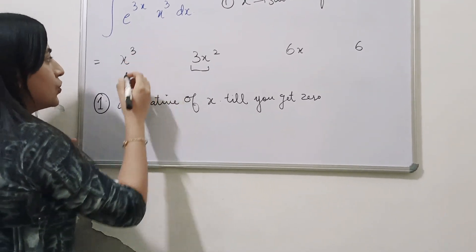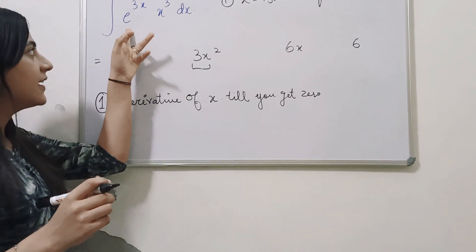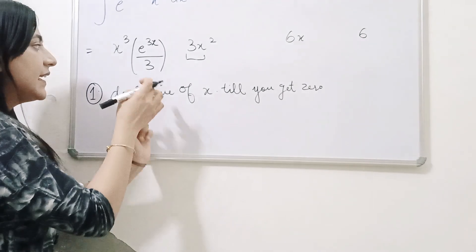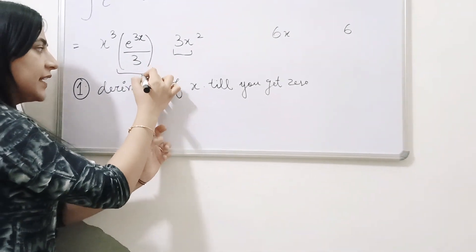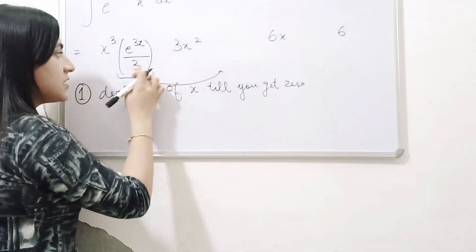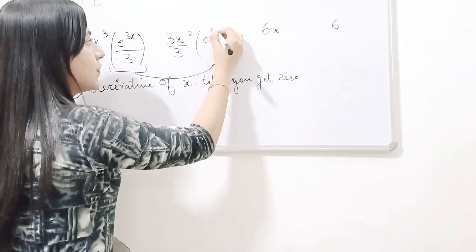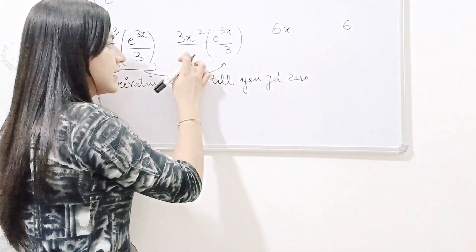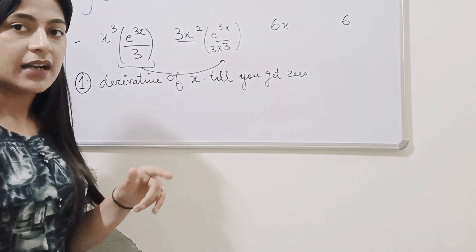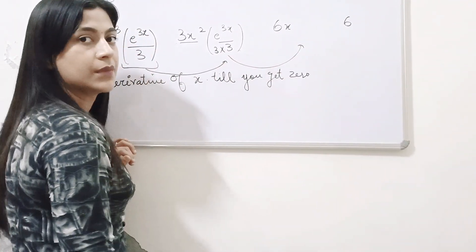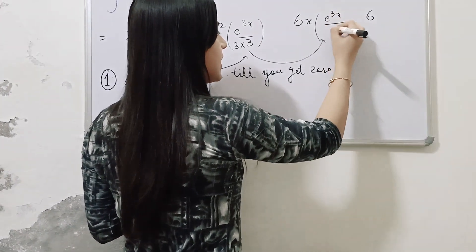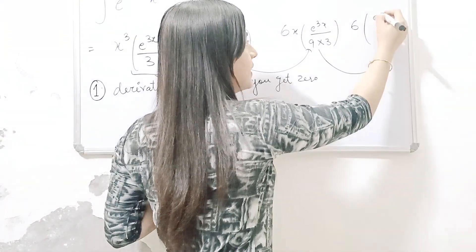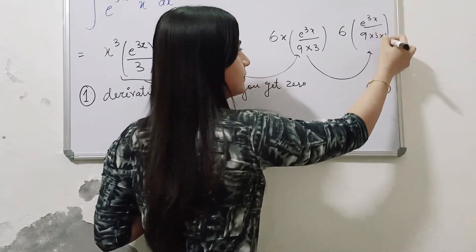Next, uske baad, next step kya hai, you will just integrate this term, you will just integrate the left part, so the integration of e power 3x will be e power 3x by 3, and then the integration of this term, joh yeh term padhi hai, next term me, uska integration, to 3 is a constant will come out, and you will be left with 3x by 3 ka integration. Is term ka integration in the next term, iska integration aapke paas aega e power 3x, 9 into 3, and last term will be the integration of this whole part, e power 3x, 9 into 3 into 3.